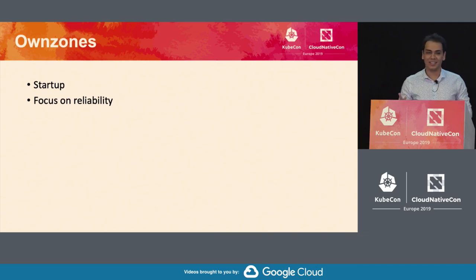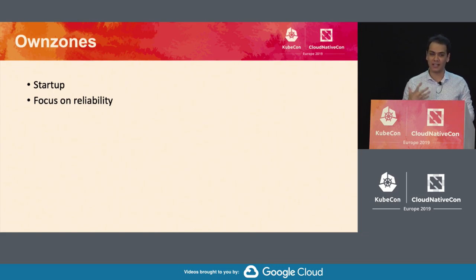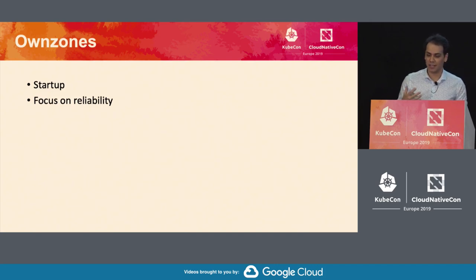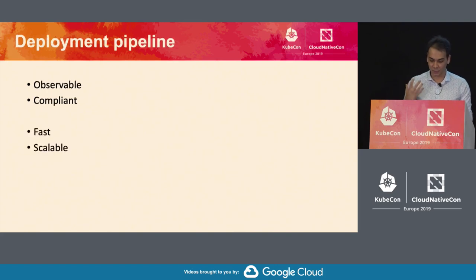OwnZones was and is a startup. As a startup, the biggest focus is delivering a lot of features fast to get feedback from customers, to improve and validate your market use. Fortunately, they've had great success, which means they now have paying customers and need to focus on reliability. So they need to make that switch from building fast and breaking stuff, to building fast while focusing on reliability and the customer experience.